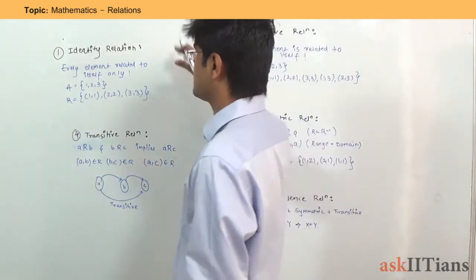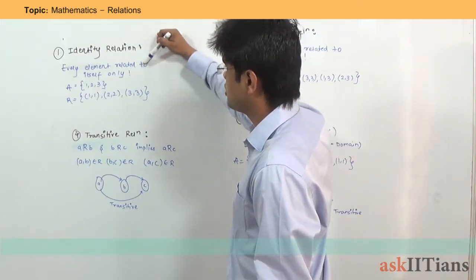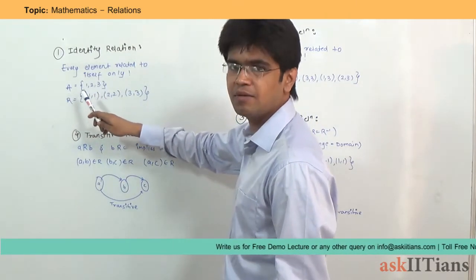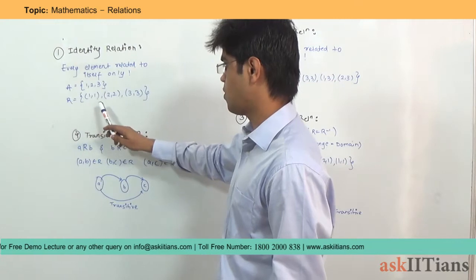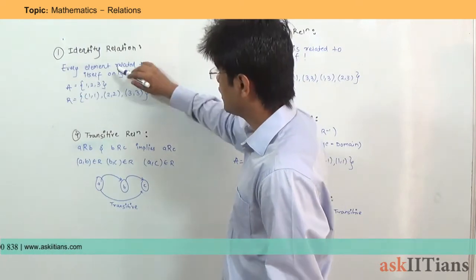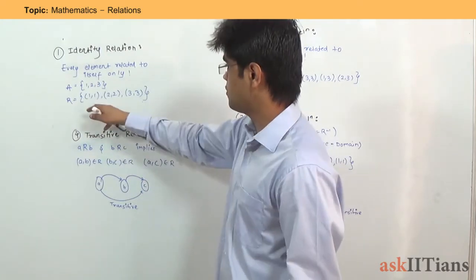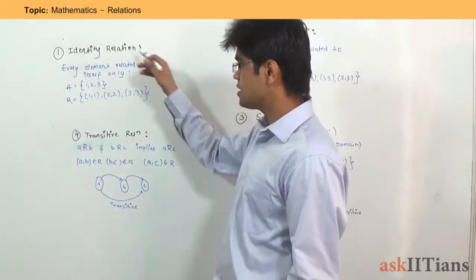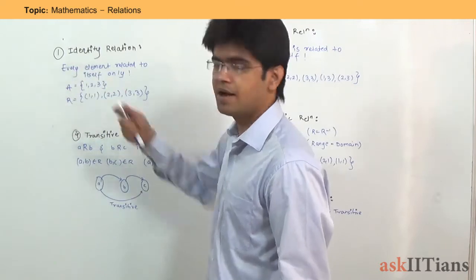The first type of Relation is Identity Relation. The definition says that every element is related to itself only. Suppose there is a set A which contains 1, 2 and 3. A relation defined on A with ordered pairs (1,1), (2,2) and (3,3) satisfies this definition — every element is mapping with itself only. So this relation is an Identity Relation.